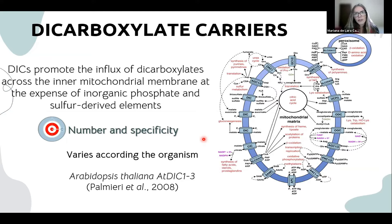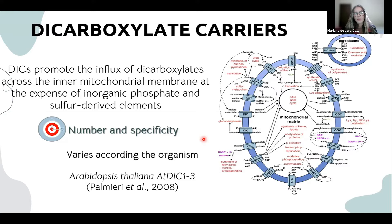The dicarboxylate carriers are proteins belonging to the MCF — the mitochondrial carrier family — whose activity is to promote the influx of dicarboxylates into the matrix. The number and substrate specificity of DICs, the dicarboxylate carriers, varies according to the organism, and in the model plant Arabidopsis thaliana genome, three genes encoding DICs were identified.